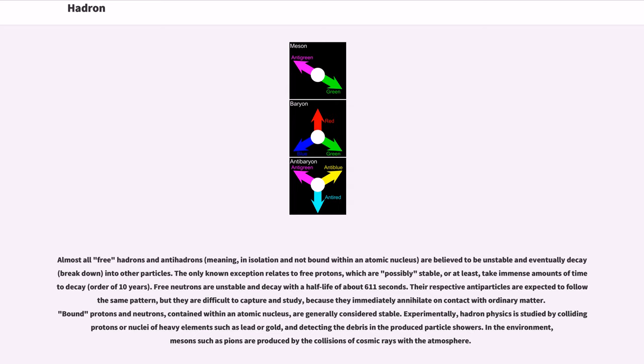Almost all free hadrons and antihadrons (in isolation, not bound within an atomic nucleus) are believed to be unstable and eventually decay into other particles. The only known exception is free protons, which are possibly stable or at least take immense amounts of time to decay (on the order of 10^34 years). Free neutrons are unstable and decay with a half-life of about 611 seconds. Antiparticles are expected to follow the same pattern but are difficult to study because they immediately annihilate on contact with ordinary matter.